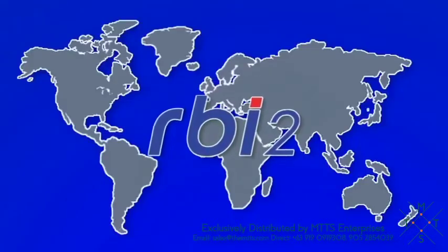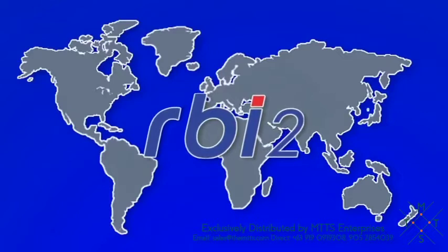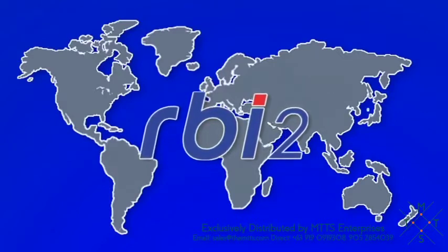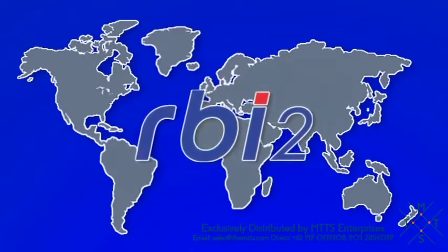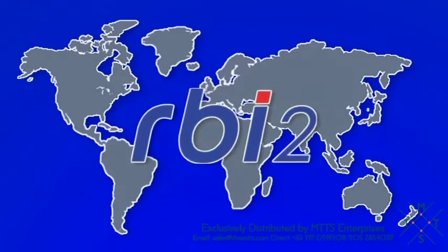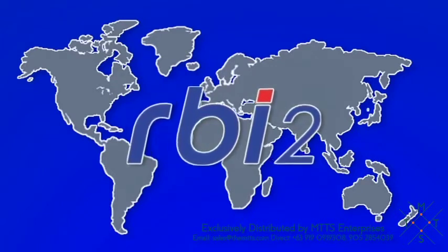The RBI2 is now used in over 35 countries around the world and has become the number one choice biopsy system to obtain a submucosa specimen for the diagnosis of Hirschsprung's disease in patients of all ages from neonate to adults.